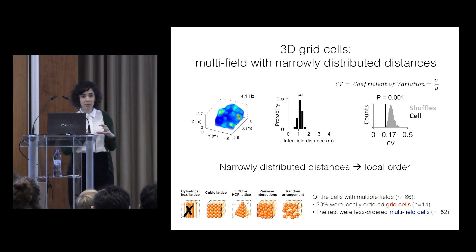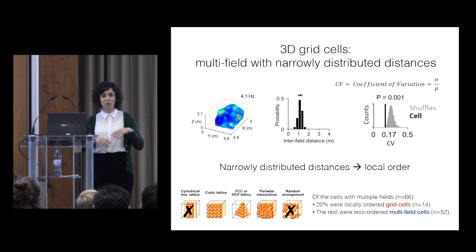And so we refer to these cells as the 3D equivalent of grid cells. For this subpopulation of cells, we can now cross out the option of their fields just being randomly ordered in space, because they are locally ordered.